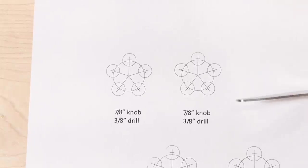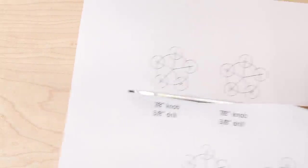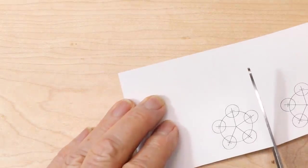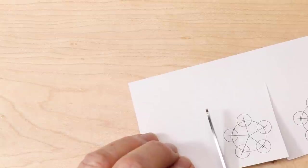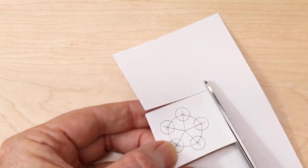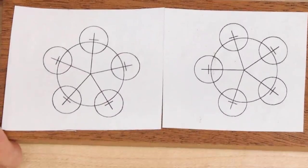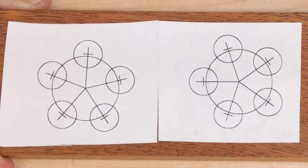I drew a design for a five-pointed knob on my computer and I printed several paper patterns. By the way, I posted this pattern on my website, along with the dimensions of my crosscut sled that I discussed in my previous video. I pasted the patterns on a scrap of something, maybe it was African mahogany, but any hardwood would do.